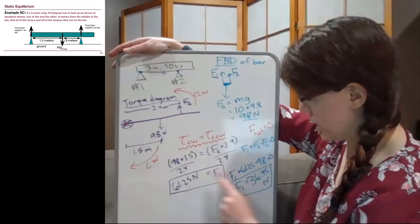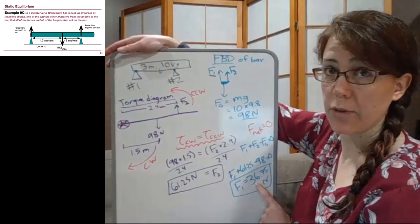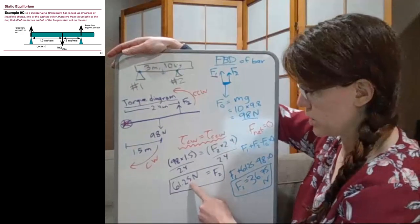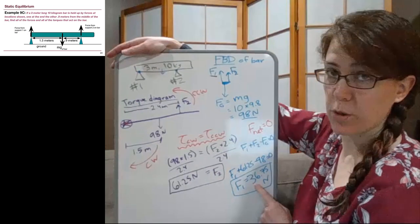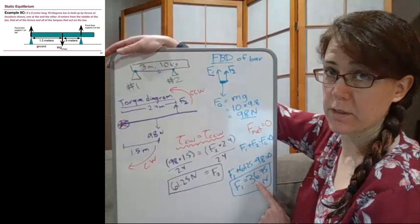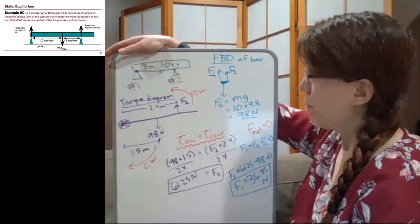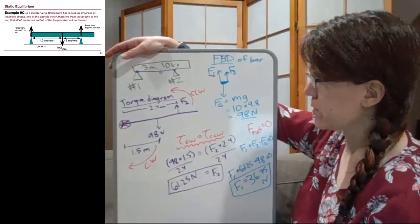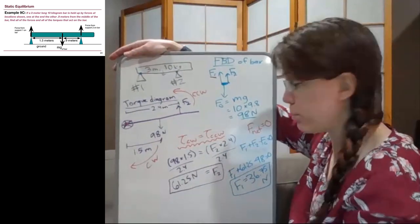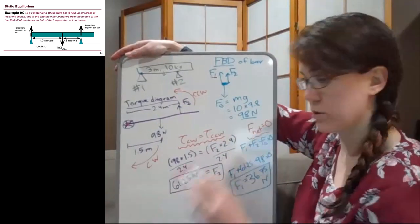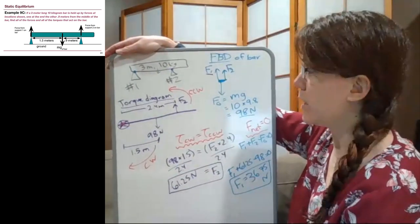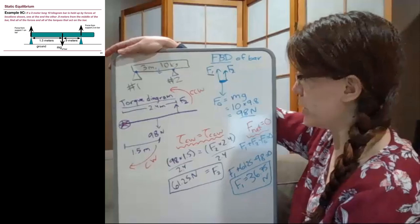And again, if we had rounded this, then this would also be rounded slightly differently, and that's fine too. 61 and 37 is fine, 61.2 and 36.8, 61.3 and 36.7. But the main point here is that if we have two different unknowns, we will have to rely on both of these conditions for static equilibrium. And that's going to be the most common thing that our problems we'll see.